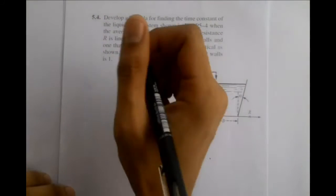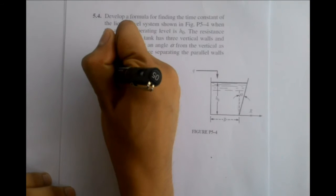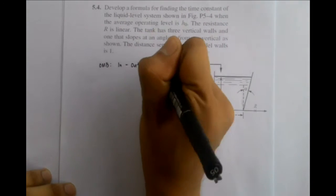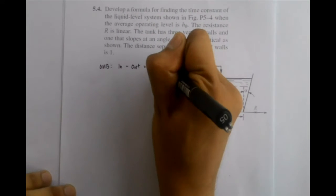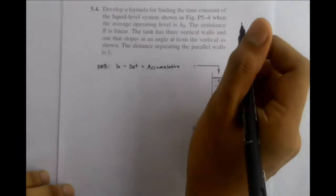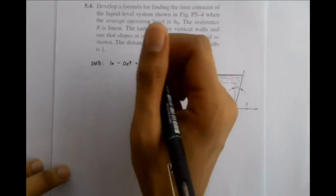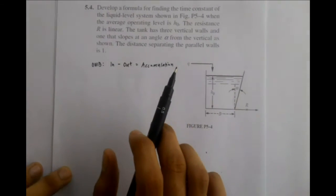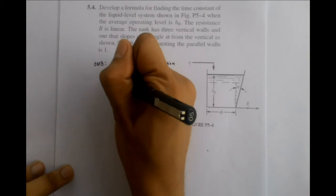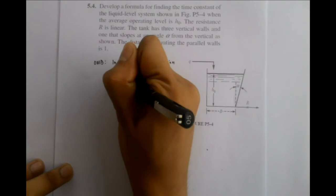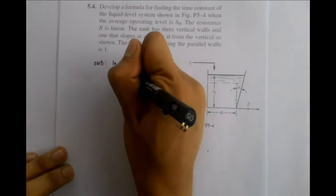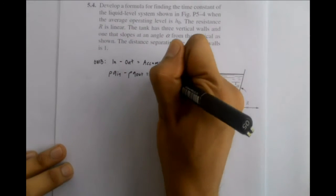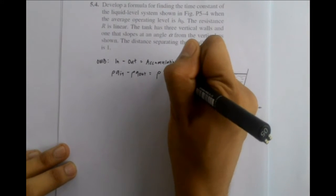To solve this equation, we need to write first the overall mass balance of the tank, which in this case is in minus out equals accumulation. Let's express this overall mass balance as variables in terms of mass flow rates. This becomes the mass flow rate in ρQ_in minus the mass flow rate out ρQ_out equals accumulation ρdV/dt.